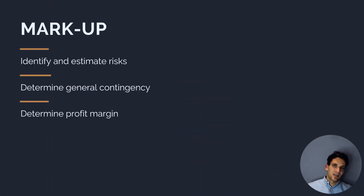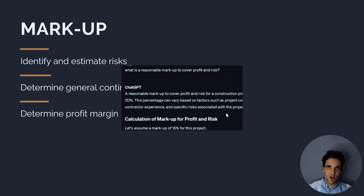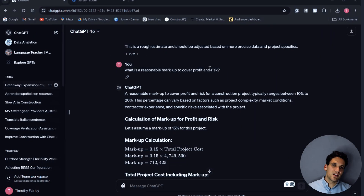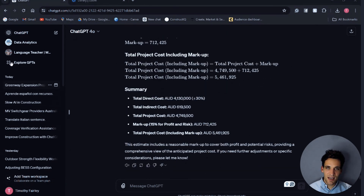Once we've calculated our direct costs and our indirect costs, we need to apply a markup. ChatGPT can help us by identifying and estimating risks, determining any contingency we need to hold, and then determining a reasonable profit margin to apply. I've asked ChatGPT what's a reasonable markup to apply, and based on the direct and indirect costs it's applied a markup and we've calculated the total project value.